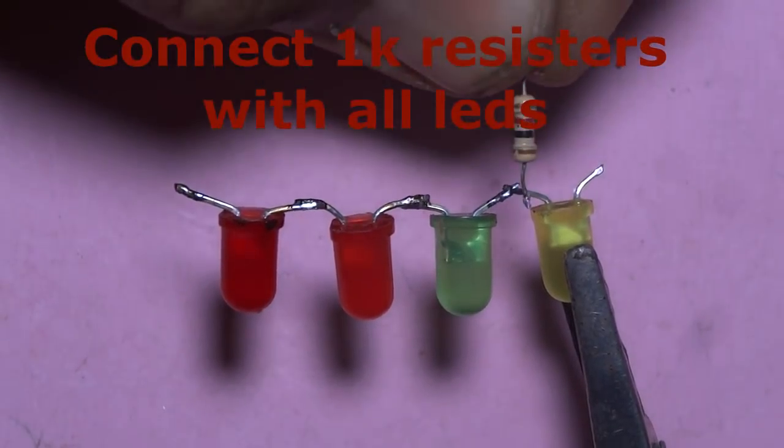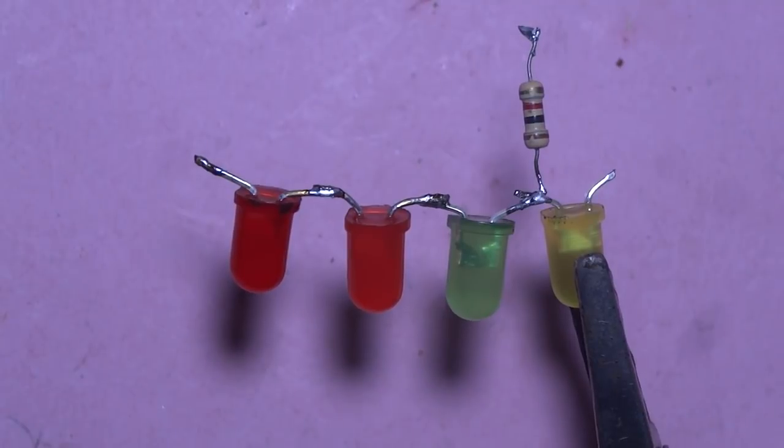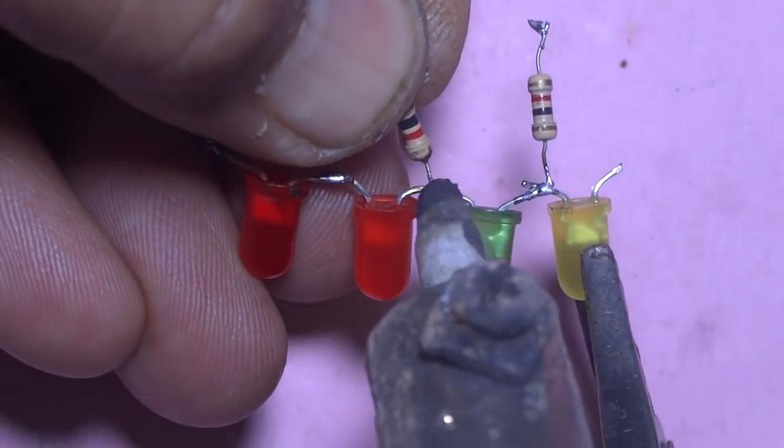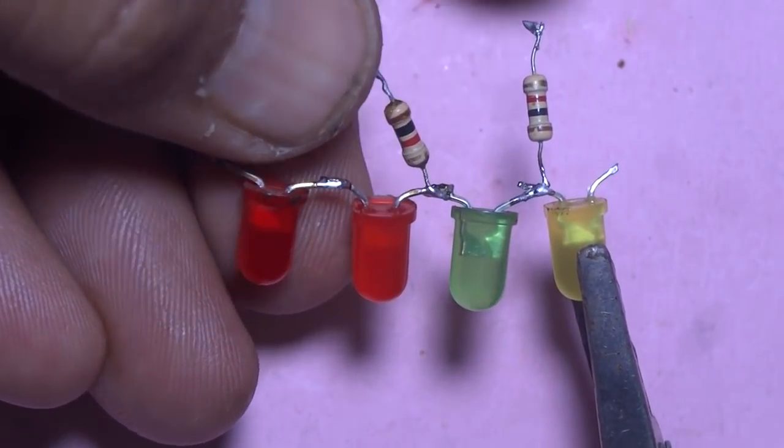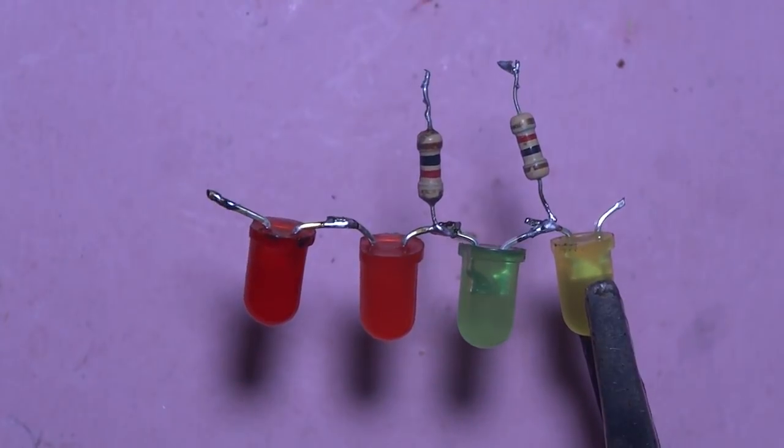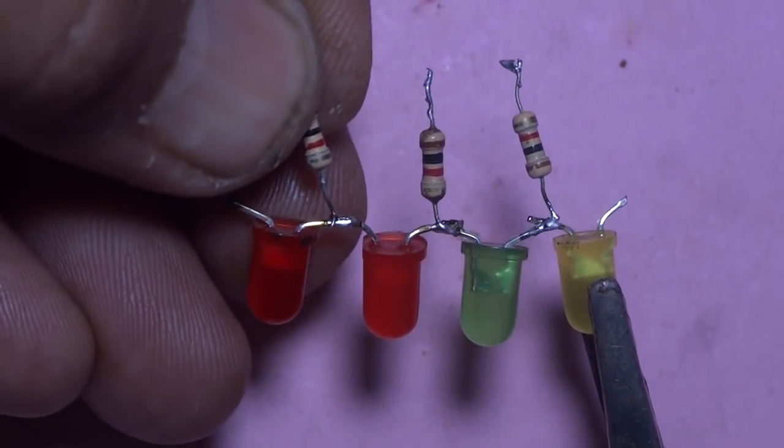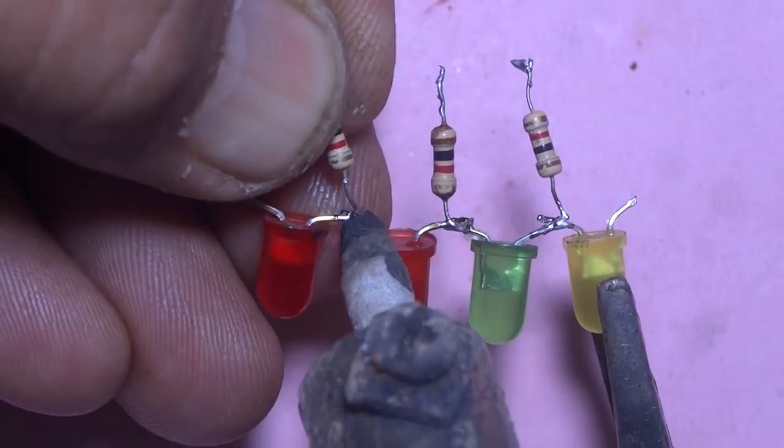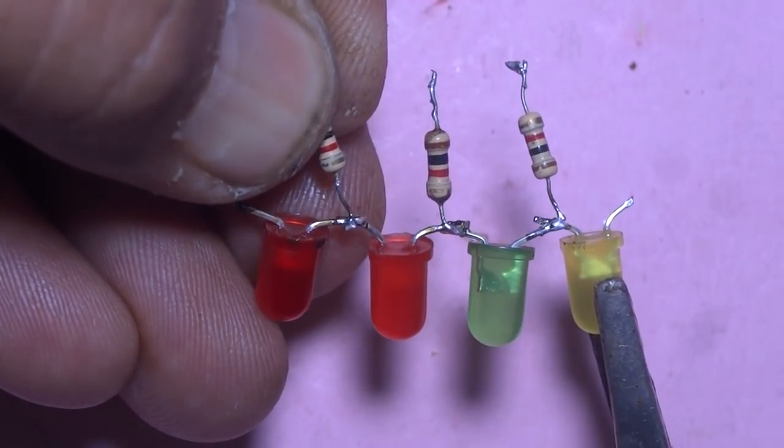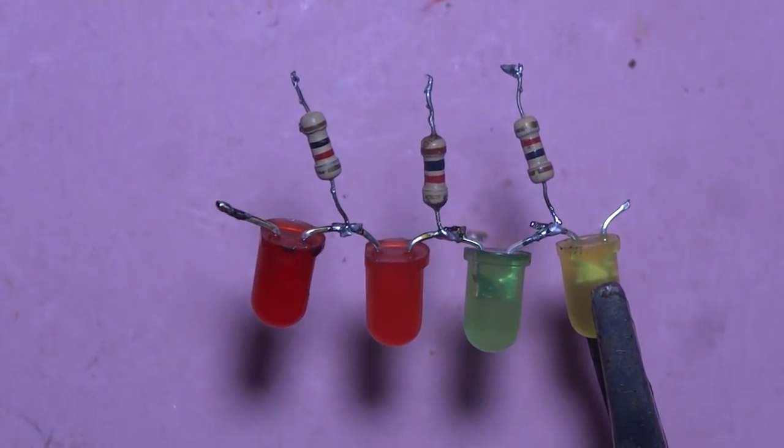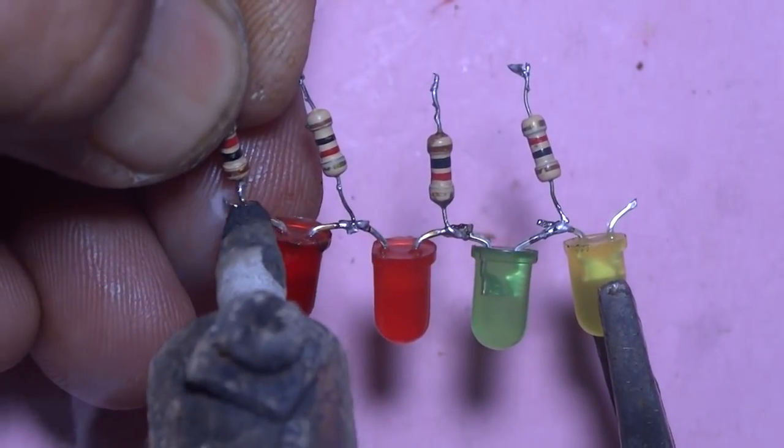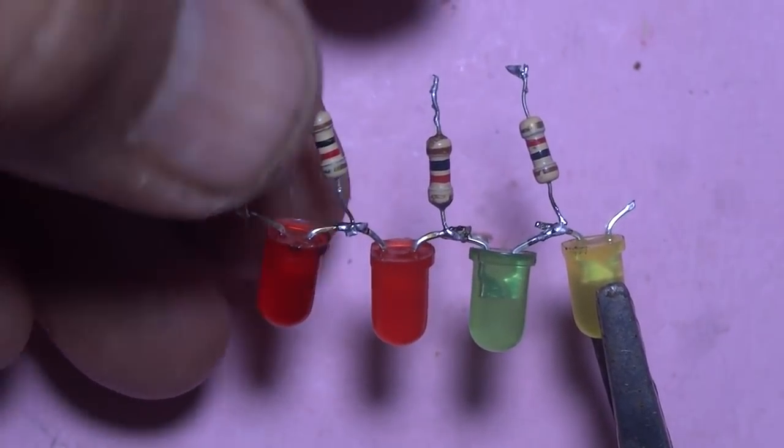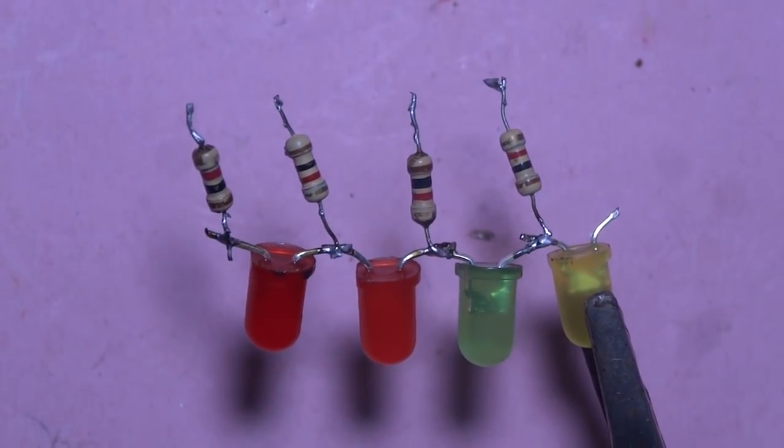Now we connect all resistors. These are 1K resistors. You can increase the numbers of LEDs and also resistors. Our resistors have been soldered.